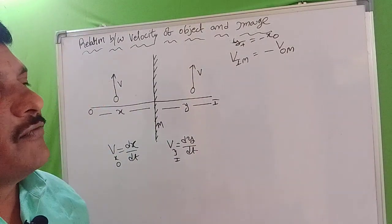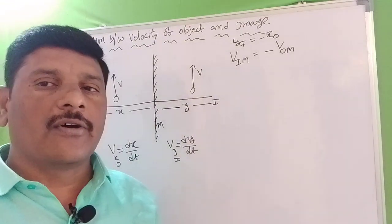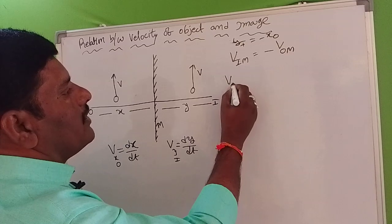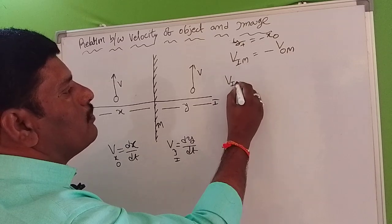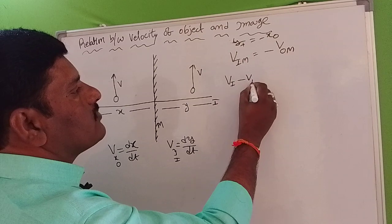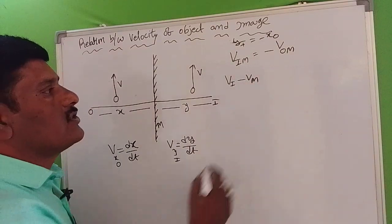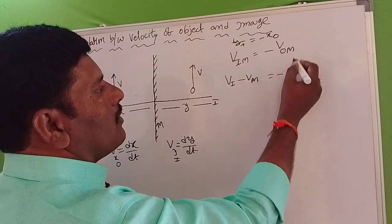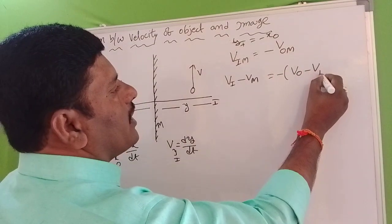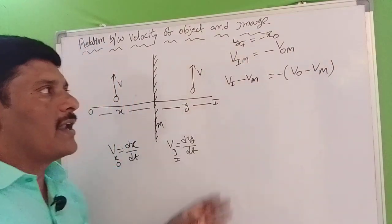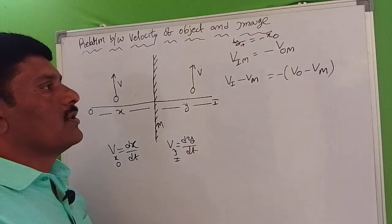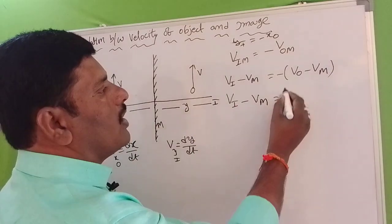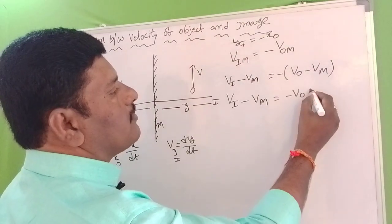With respect to the ground, we will describe the velocity relations with respect to the image. The velocity of the object with respect to the mirror is V0 minus Vm, where V0 is the object velocity and Vm is the mirror velocity, both measured from the ground.